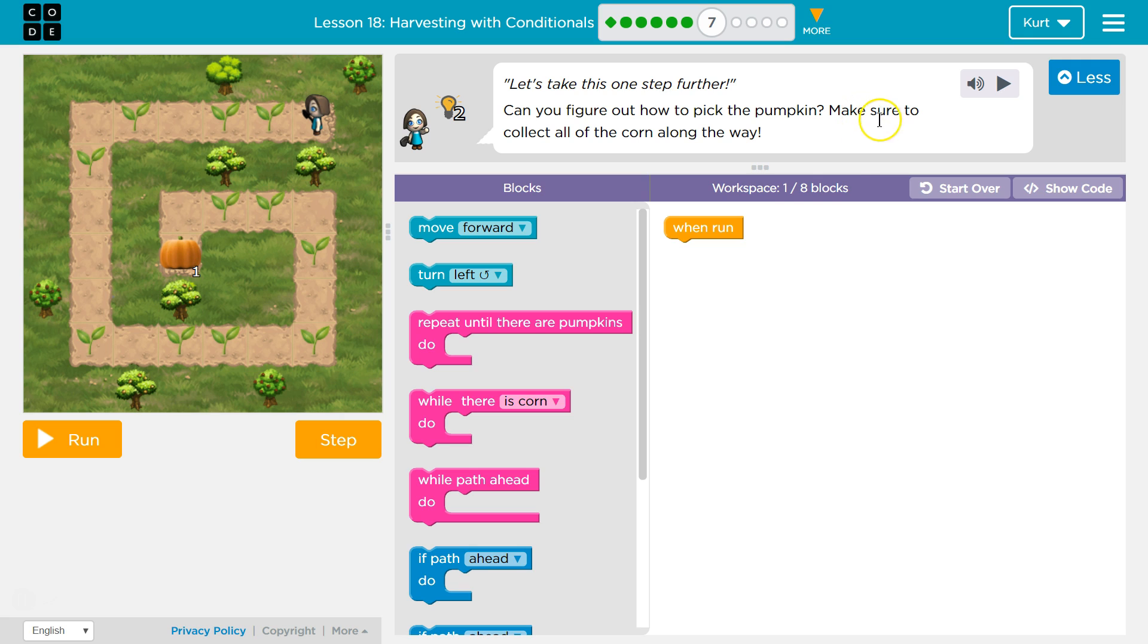Whoa, tricky. So they want us to do this within 8 blocks. It looks like a square, so that means that's going to be somewhat the same code, right? I've got to get to the end, and while I'm going to the end, I need to step and look for corn.